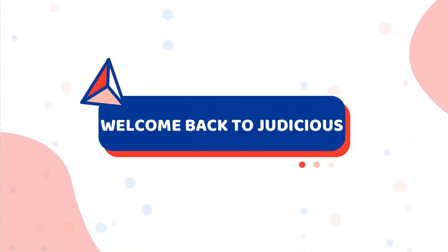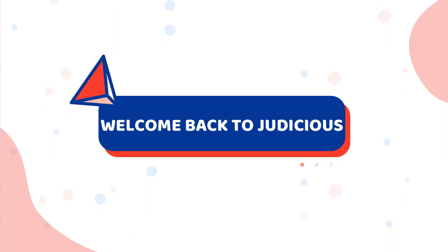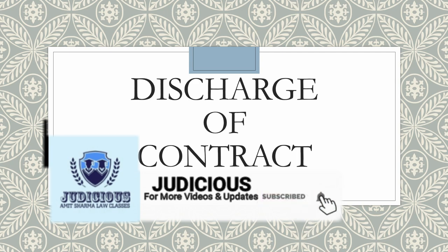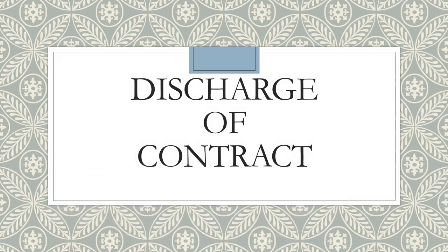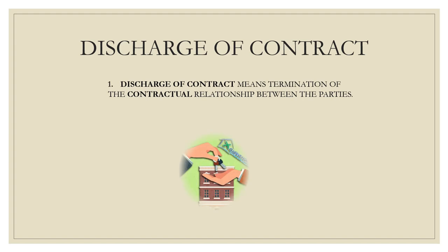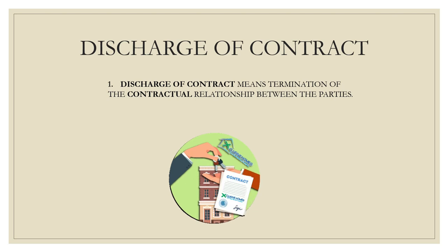Warm welcome to all on this new session of Judicious. The topic we are going to discuss today is discharge of contract. First, let us look at the meaning of discharge of contract. Simply put, a discharge of contract means when the contractual relationship between the two parties who made a contract comes to an end. With the end of that contractual relationship, we say that the contract has been discharged or terminated.